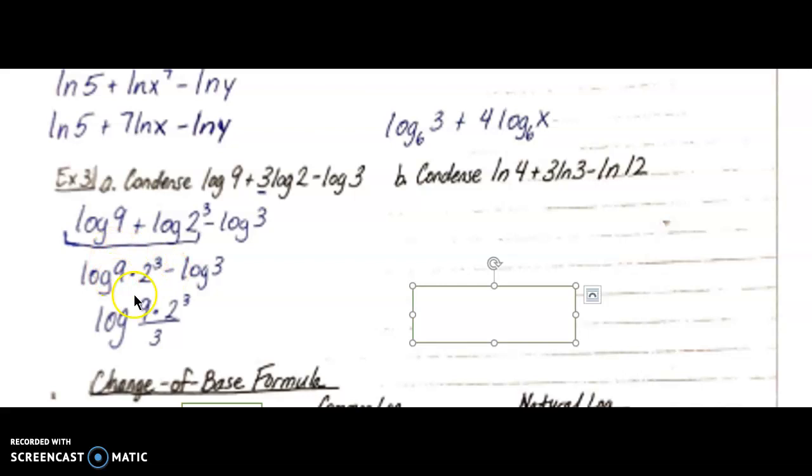So we take all of this log of nine times two to the third, that's our numerator, and we place the three in our denominator. So we have condensed this into one single logarithm: log of nine times two to the third divided by three.